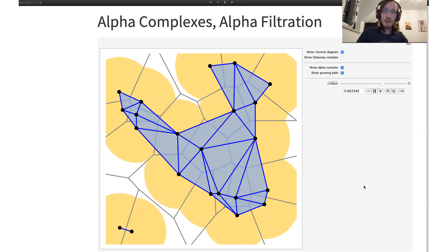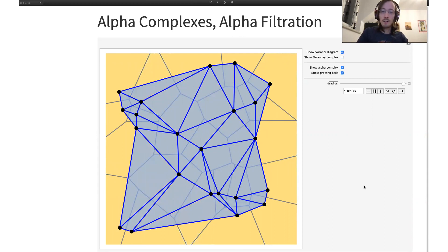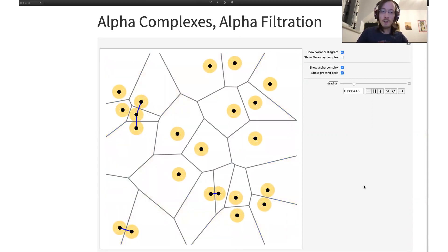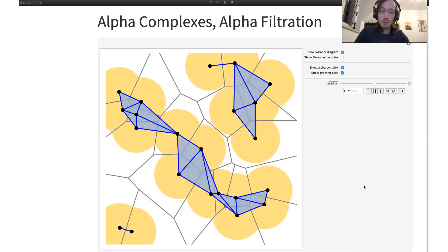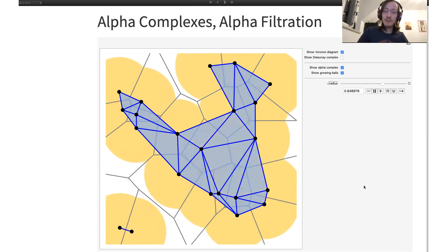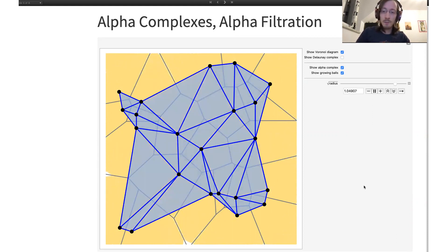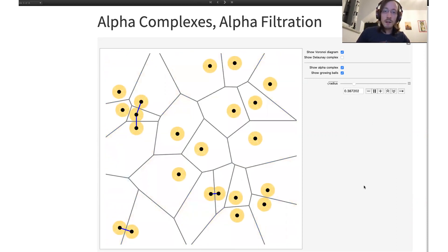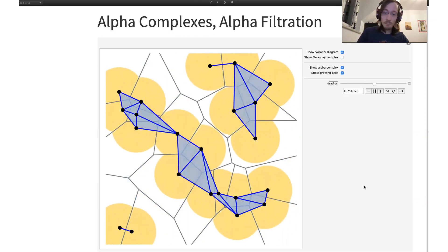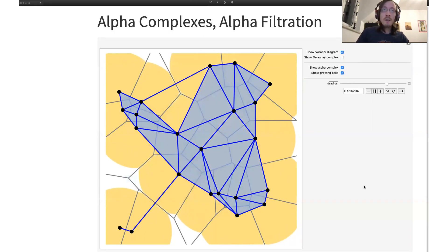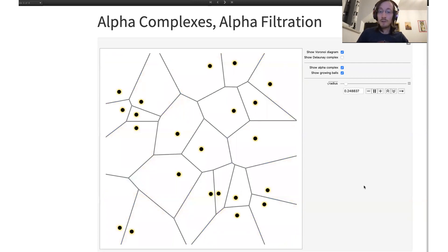According to the Nerve theorem, an important mathematical result, the alpha complex and the union of the disks are homotopy equivalent. So in particular, they share those topological features. But something even stronger holds by a stronger version of the same theorem—the persistent Nerve theorem. Also, the inclusion maps of those two objects nicely mirror each other. And this means that if you are performing topological data analysis or persistent homology, it really doesn't matter whether you look at those growing disks or at the chain of alpha complexes.